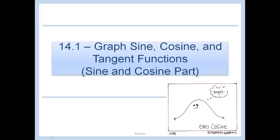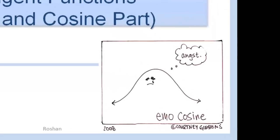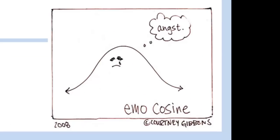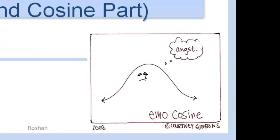14.1: Graph sine, cosine, and tangent functions. In this lesson we're just going to do the sine and cosine part, and there'll be a part 2 for tangent. You're not really going to understand this comic until the end of the lesson, but this kind of looks like the cosine graph, so take a look back after we graph cosine.